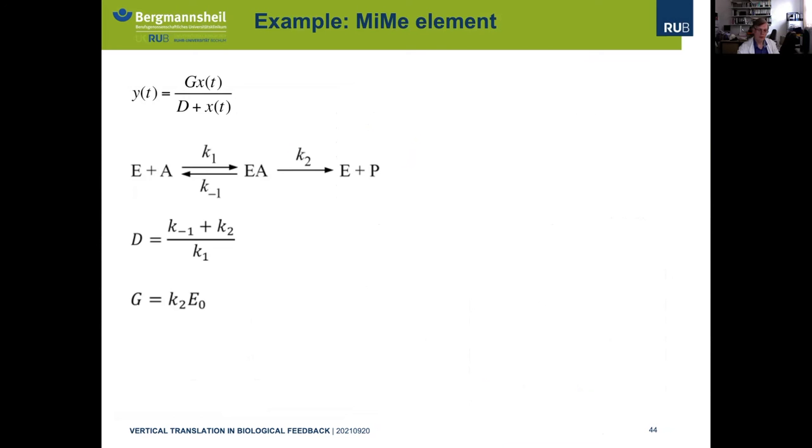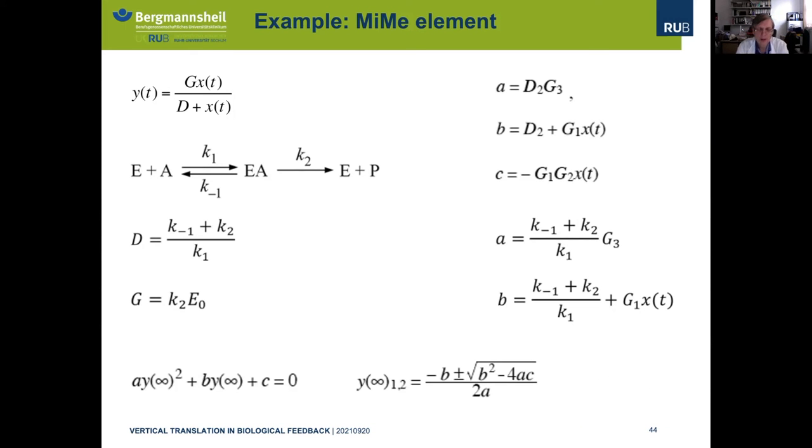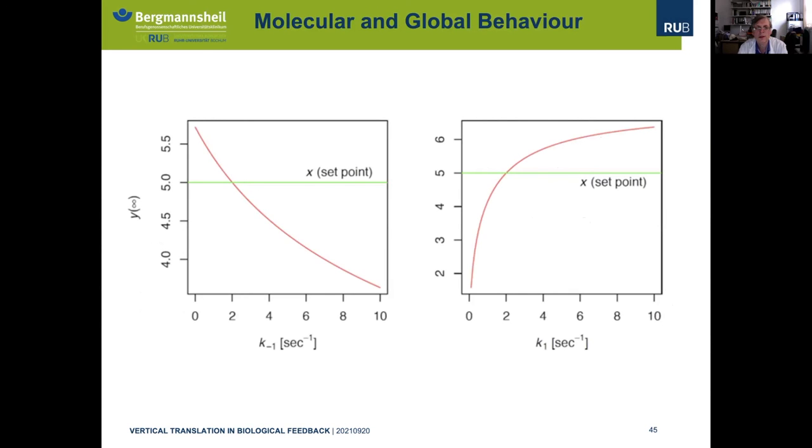We go back to the MIME element. We can express our constants a and b also in terms of rate constants, as we did with the variables G and D. This gives us the opportunity to formulate the steady-state behavior of the feedback loops in terms of rate constants. We have made this here for the variable y and shown how it depends on the two variables k-1 and k1. In this way, we have developed a systematic method to conclude from the molecular level to the level of the whole organism.